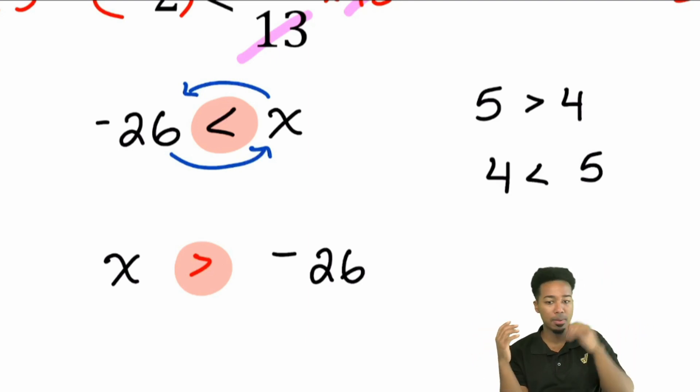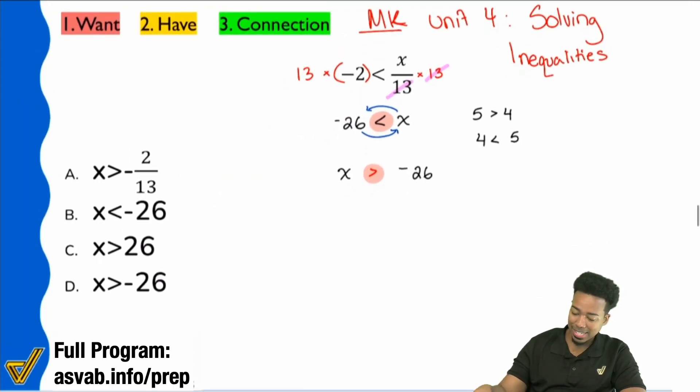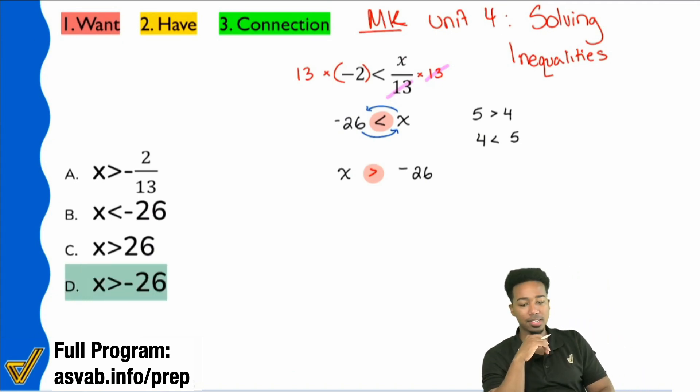Because you flip the position of the bigger and smaller, you have to flip the symbol to basically keep it true. Cool. So now that we've done that, our answer is x is greater than negative 26, which is answer choice D. That is the correct answer.